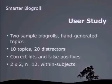To evaluate this, we did a user study with two sample blog rolls taken from actual blogs, and hand-generated a list of topics for each. For each blog roll we came up with ten actual topics discussed in posts, plus twenty distractors. Participants had ten minutes to skim the blog roll and identify which of the thirty topics were actually discussed. They were scored on correct hits and false positives.